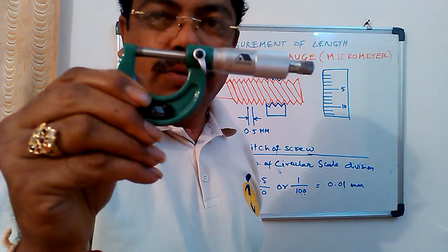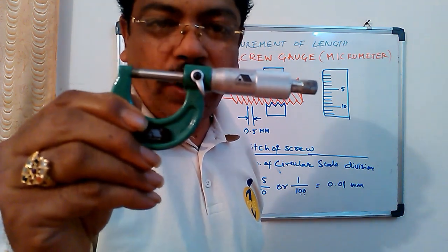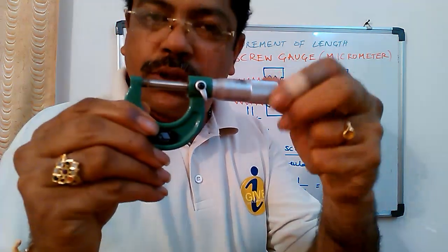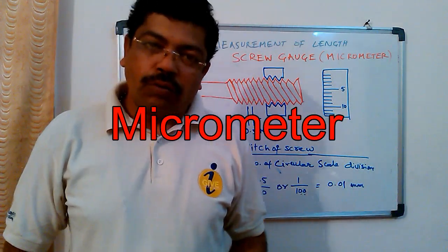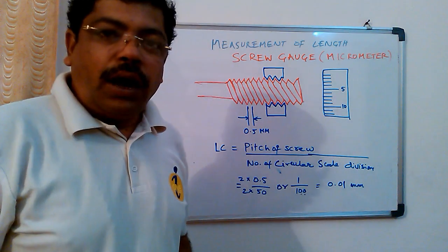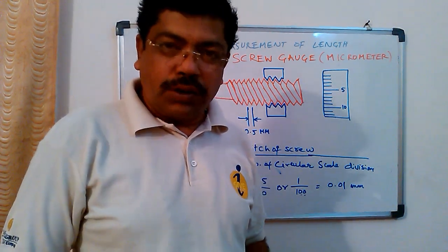In textbooks it is written as screw gauge because it works on the principle of screw, and commercially this is known as micrometer. So let us see how this screw gauge works out.